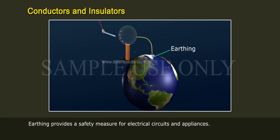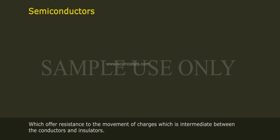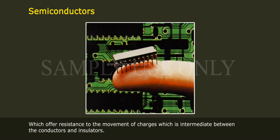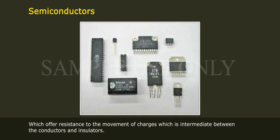Earthing provides a safety measure for electrical circuits and appliances. There is a third category called semiconductors, which offer resistance to the movement of charges that is intermediate between conductors and insulators.